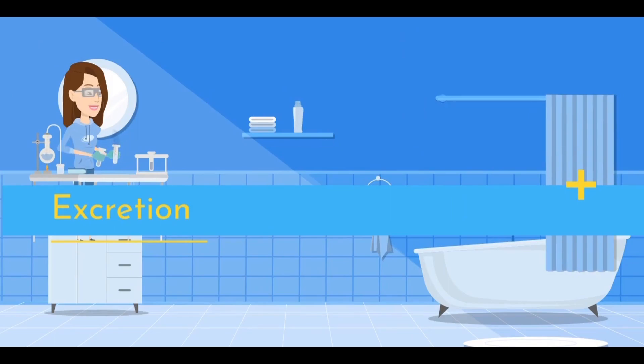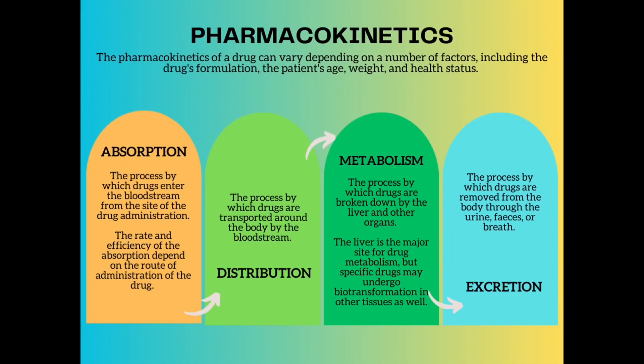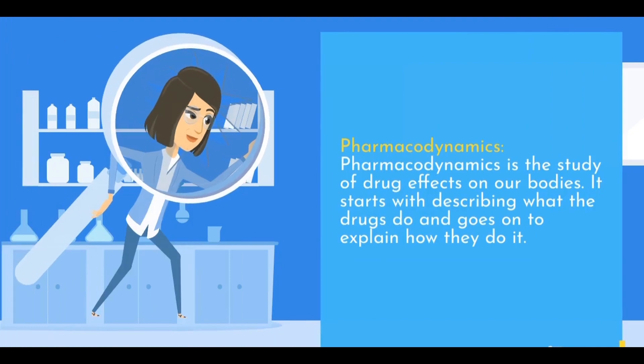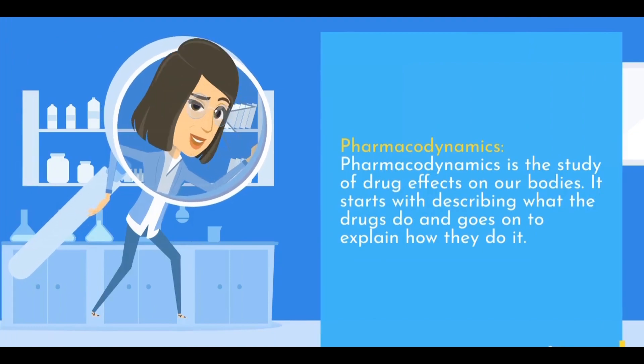Now let's look at a summary of pharmacokinetics. The pharmacokinetics of a drug can vary depending on a number of factors, including the drug's formulation, the patient's age, weight, and health status.